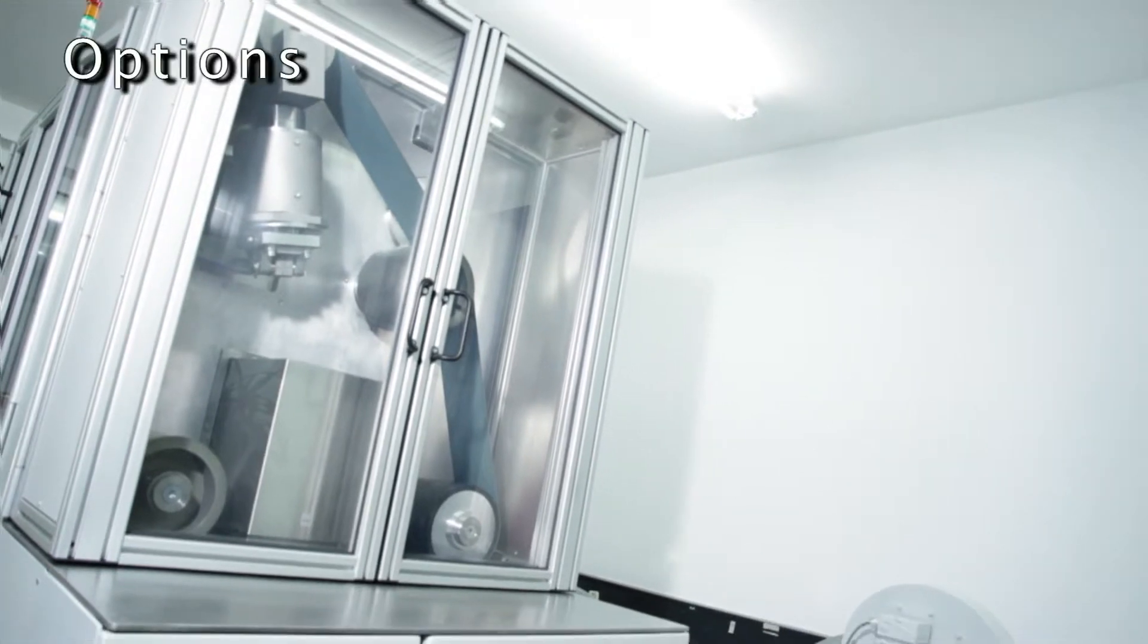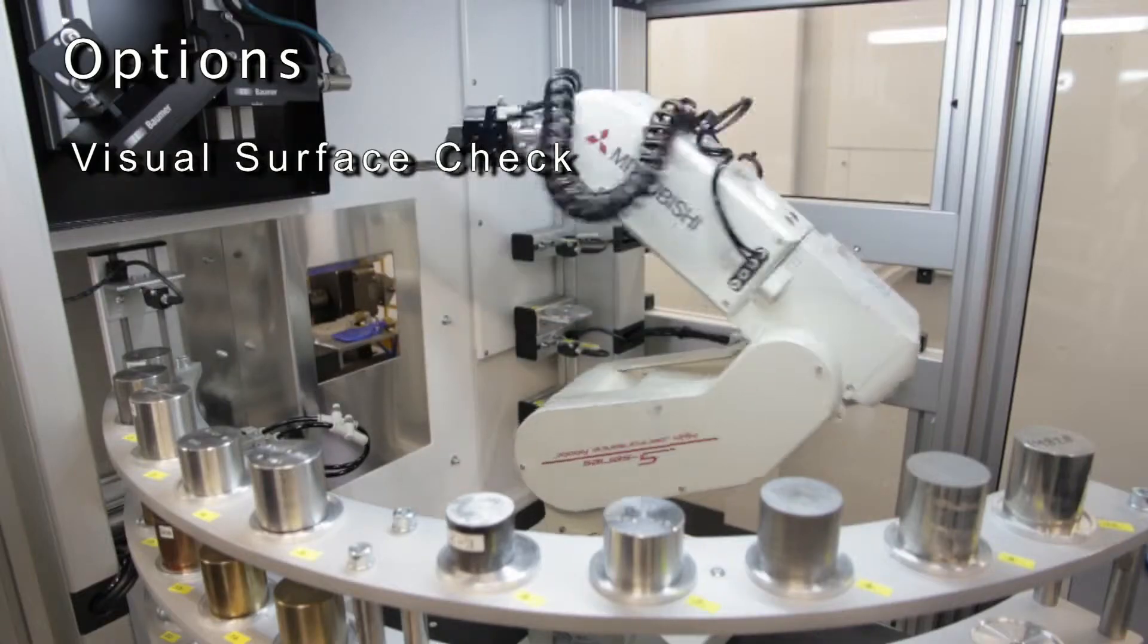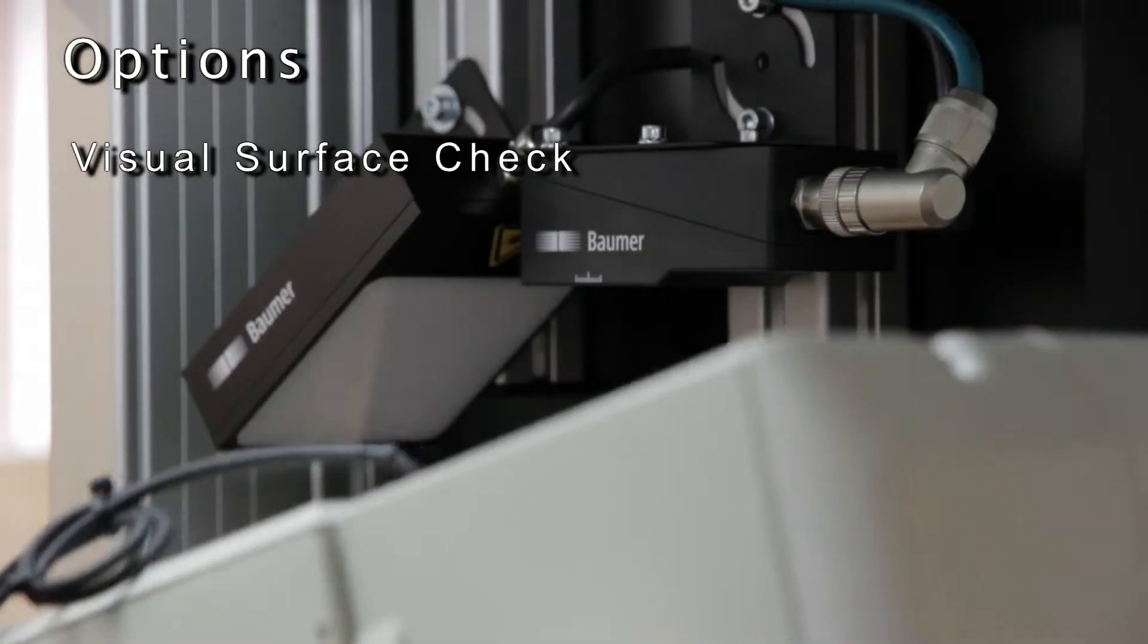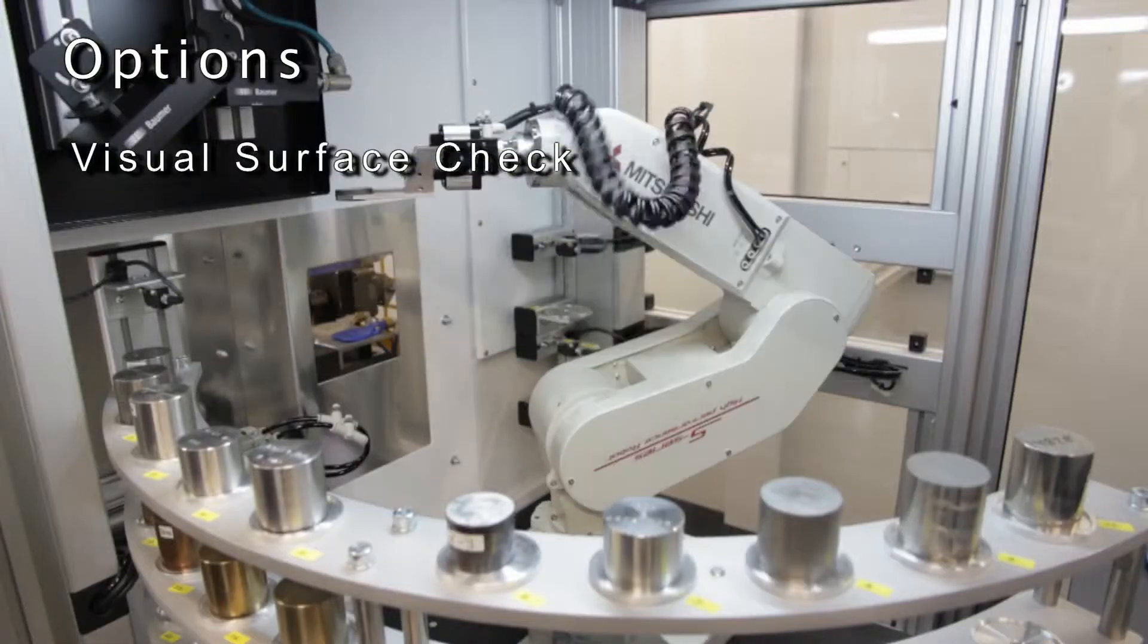Further options include visual surface check to identify inclusions, best sparking positions, or reject samples before measurement.